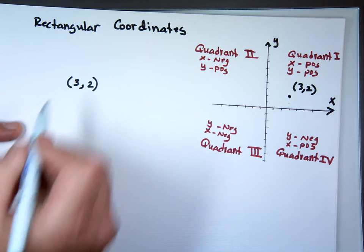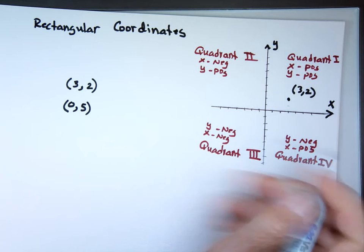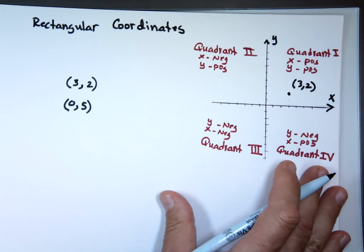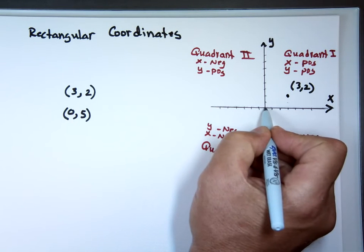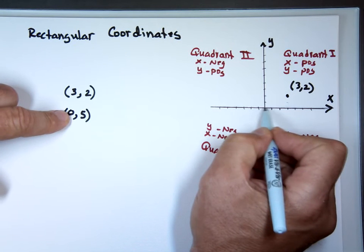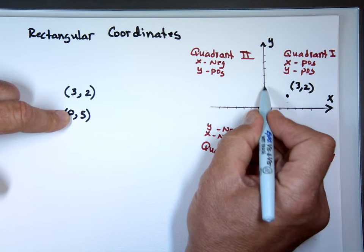If you want to locate the point 0 comma 5, where is 0 comma 5? You start from the origin. You don't move in the x direction, 0 units in the x direction, but 5 in the y. Let's go up 5. 1, 2, 3, 4, 5.